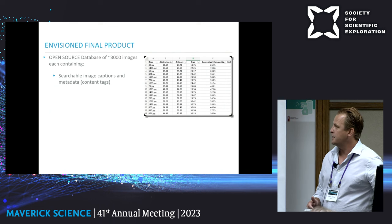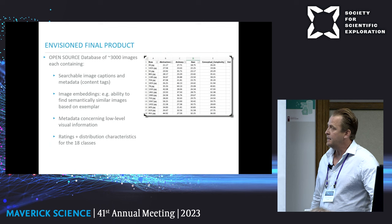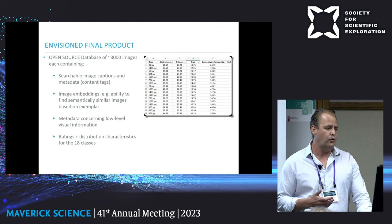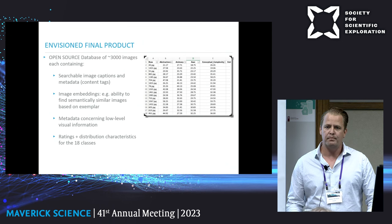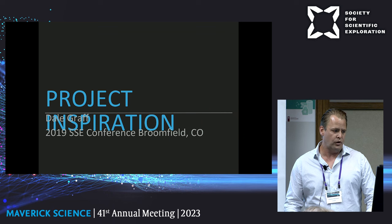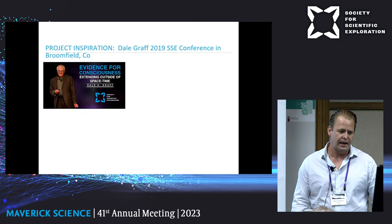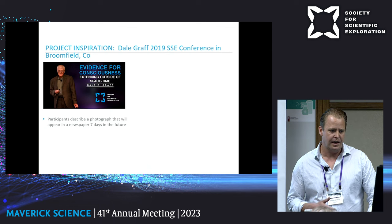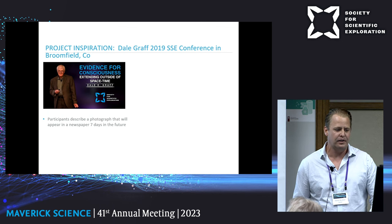Now for the 'why' behind this work. At the 2019 SSE presentation, Dale Graff described a study in which viewers — in this case dreamers — were tasked to describe a newspaper headline and photograph that would appear seven days into the future. Viewers dreamed about a specific image they would see and then created sketches based on their dream content. The sketch on the left and the actual photograph on the right make for an extraordinarily interesting comparison.